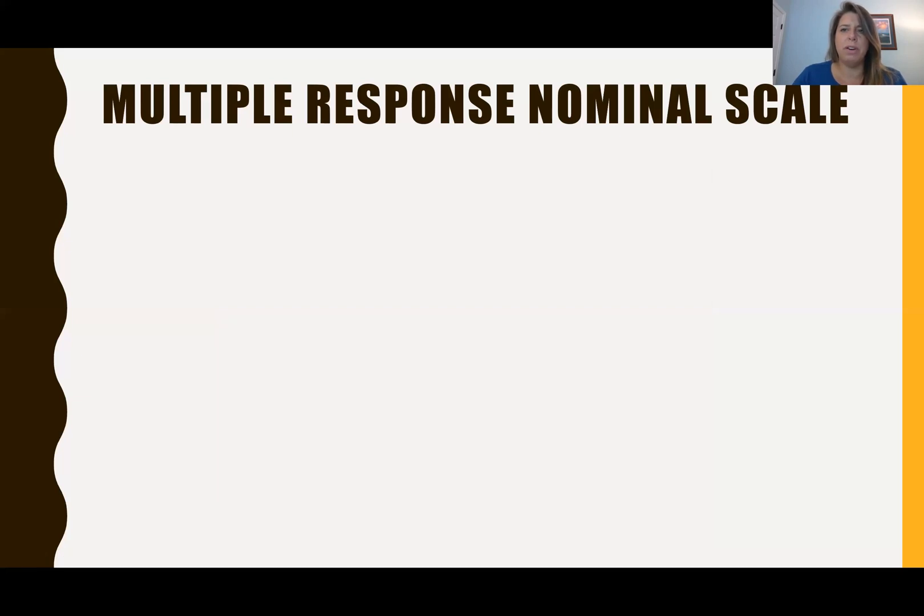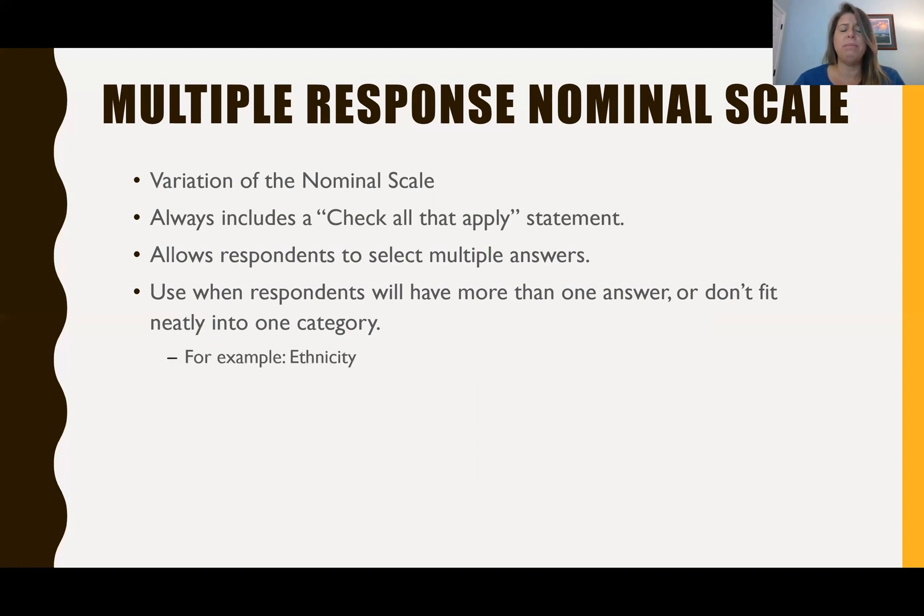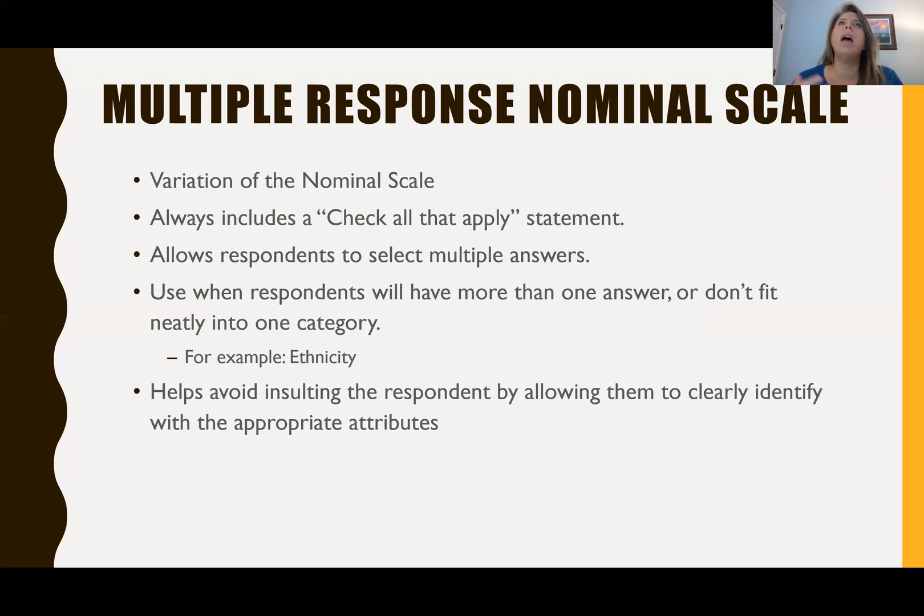So we also have these other scales, these multiple response nominal scales, and this is a variant of the nominal scale. And the difference between this and what we call the traditional nominal scale is that a multiple response nominal scale has a check all that apply statement. So you can select multiple answers. And we use these when respondents will have more than one answer or when they don't fit neatly into one category. So this might be something like ethnicity where people have different ethnicities that they identify with, and it really helps avoid insulting the respondent by allowing them to clearly identify with the appropriate attributes.